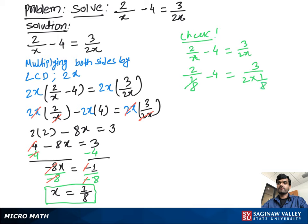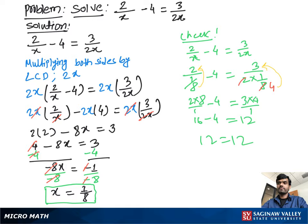Now 8 goes from the bottom to the top, so we write 2 times 8 over 1 minus 4, which equals 16 minus 4. On the right side, 4 goes from the bottom to the top, giving us 3 times 4 over 1, which is 12. So 16 minus 4 is 12, equal to 12. The solution is correct.